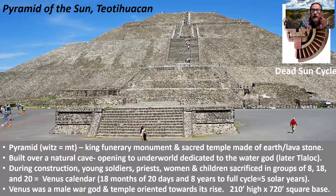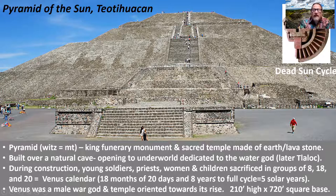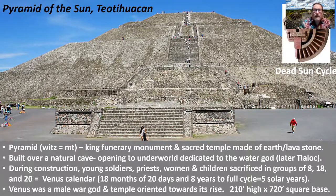The Pyramid of the Sun was built over a natural cave — the Mayans and Aztecs believed the opening to the underworld was through a cave dedicated to the water god Tlaloc. During construction, young soldiers, priests, women, and children were sacrificed in groups of 8, 18, and 20 — numbers that relate to the Venus calendar of 18 months of 20 days and 8 years to full circles, equaling 5 solar years. They were masters of archaeoastronomy. Venus, which we consider a goddess of love, was for them a male war god — and the temple is oriented towards the rise of Venus each day. It is 210 feet high and about double the base width of the Great Pyramid.